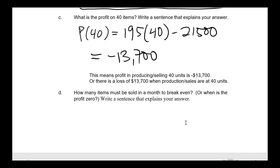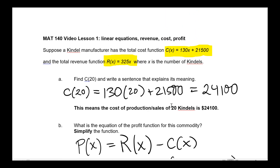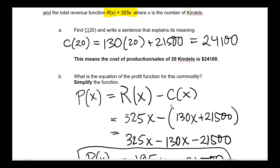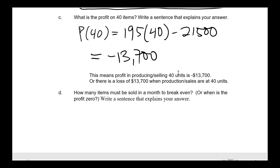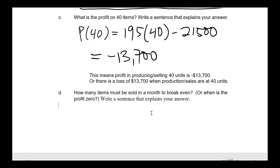The last question asks how many items must be sold in a month to break even. Note that this is the first mention of 'months' — it wasn't stated earlier, but these were revenue and cost functions per month. The break-even point is when profit equals zero, which is when revenue equals cost.